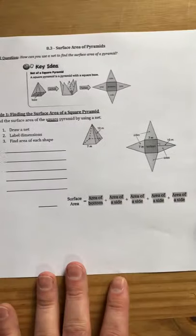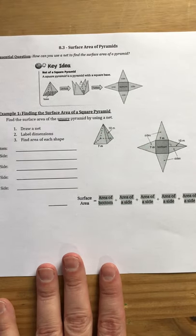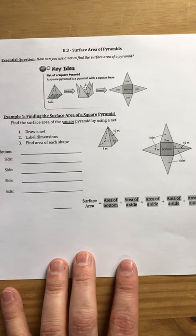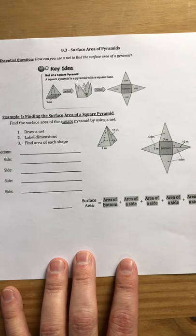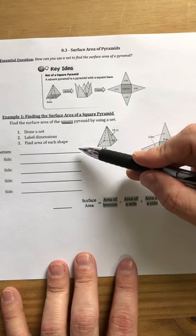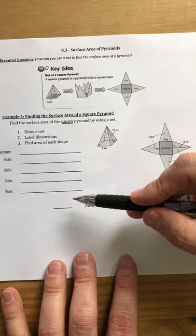So the first example we're going to do, we're actually going to do together. You can see that there are some steps to follow when you want to find the surface area of a pyramid. First you want to draw the net and then you want to label all the dimensions and then find the area of each shape. And you can see right here I've labeled bottom side, side, side, side.